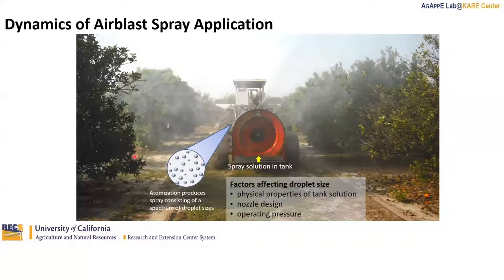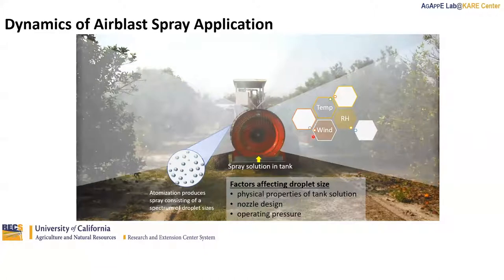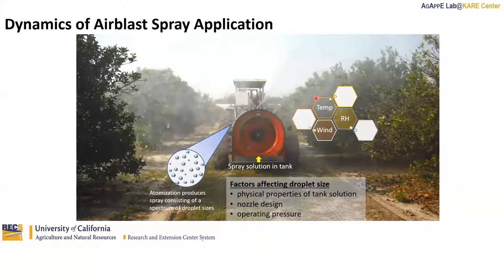Atomization produces spray consisting of droplets of different sizes. The factors that affect droplet size are physical properties of the tank solution such as density and viscosity, as well as nozzle design and operating pressure. As a spray cloud moves, there is an influence of weather factors. For instance, high temperature combined with low relative humidity accelerates droplet evaporation to favor spray drift. We also know the effect of high winds, which also favor spray drift.